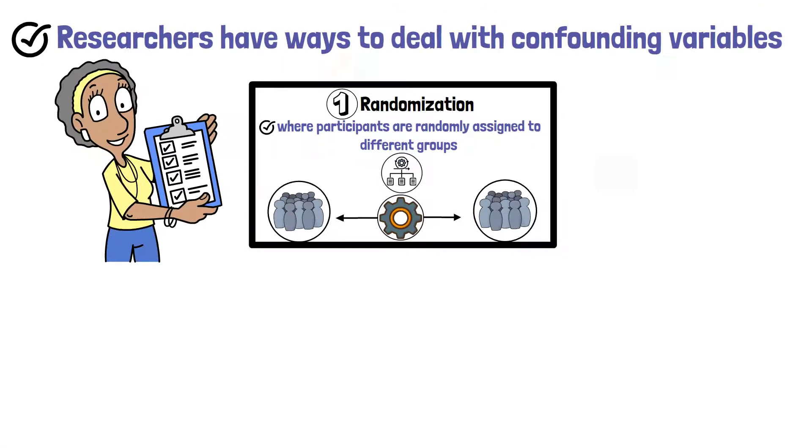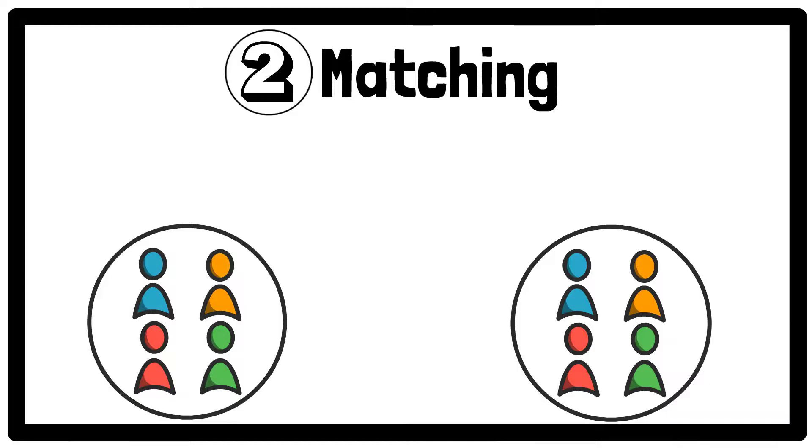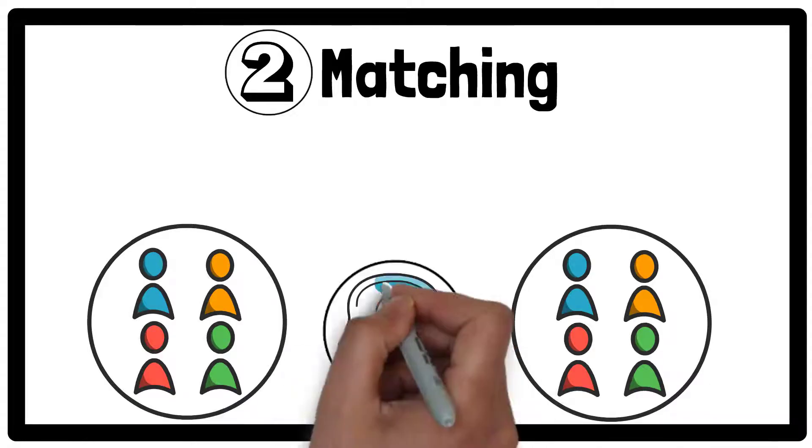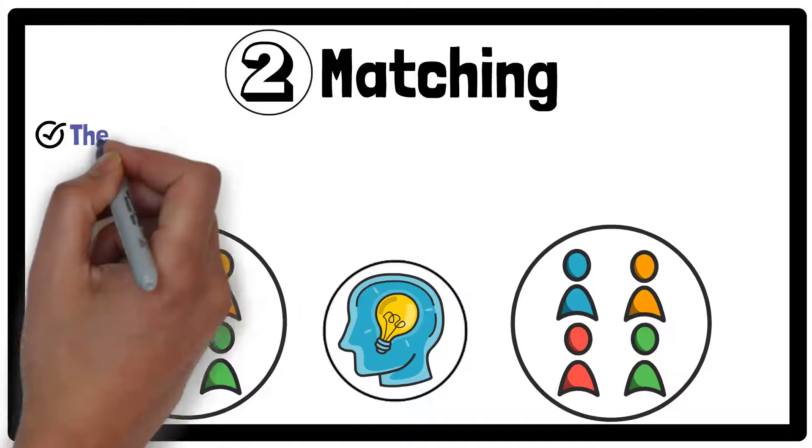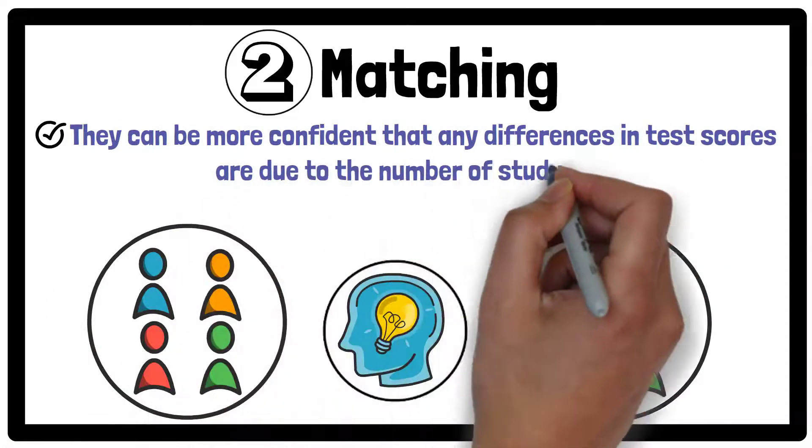Another method is matching, where researchers make sure participants in different groups are similar in certain ways. For example, they could match students based on their prior knowledge levels. This way they can be more confident that any differences in test scores are due to the number of study hours, not prior knowledge.